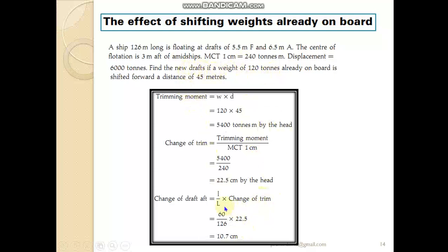Using the same formula we can find the change of draft forward by changing the value of l to the distance of the center of flotation from the FP. In that case, the distance from FP to midship is 63 meters, and since the LCF is 3 meters aft of midship, adding gives 63 + 3 = 66 meters. So l = 66 meters, and the LBP remains 126 meters.